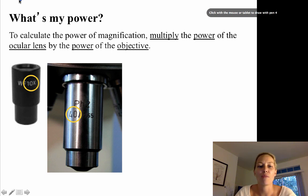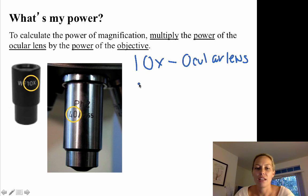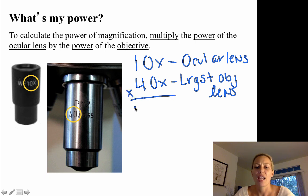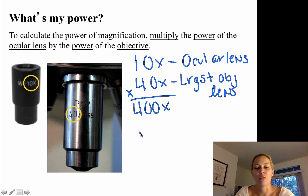To calculate the power of magnification, we multiply the power of the ocular lens by the power of the objective lens. So here I've got my 10x ocular lens magnification and a 40x objective, which is usually the largest objective lens. Multiplying the two together gives a magnification of 400x — so whatever I'm looking at, whether an eyelash or a penny, would be magnified 400 times.